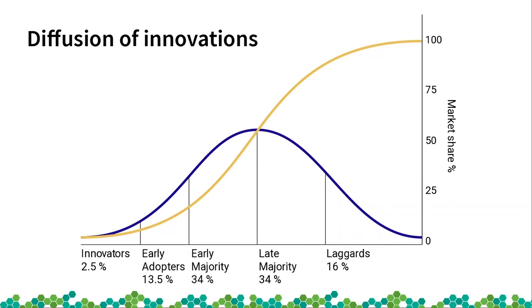This applies to all new software, or in general any product — it's how people get used to a new tendency in the market. You have the innovators who are well-educated with more sources of information and more open. Then the early adopters, who also have many sources of information and are popular social leaders, followed by the early majority who are more doubtful about using new technology but also join.